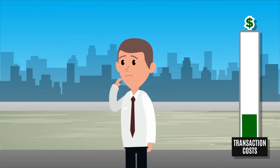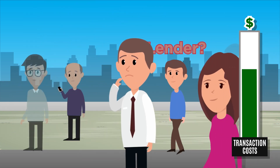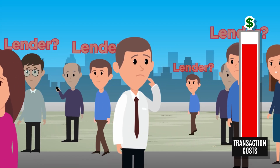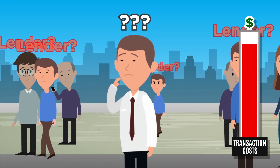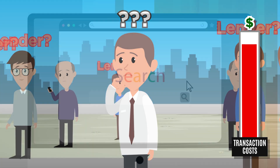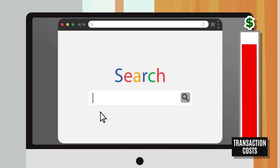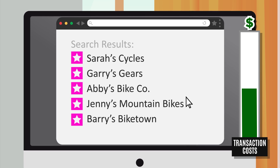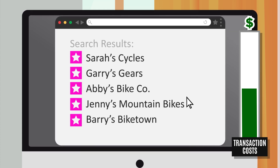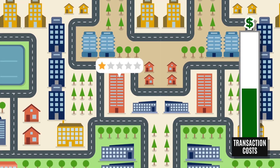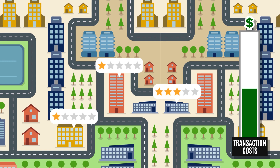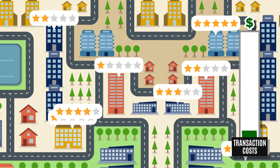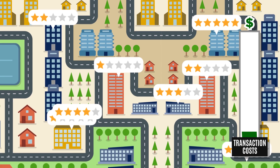Without banks, the transaction costs for borrowing money would be much higher, because borrowers would have to spend a lot of time and money to find other people interested in lending their savings. A more modern example is internet search engines, which reduce transaction costs by making it easier to find shops and sellers who offer what you're looking for. Online reviews too reduce transaction costs, because they help would-be buyers identify better, potentially more trustworthy sellers and service providers.